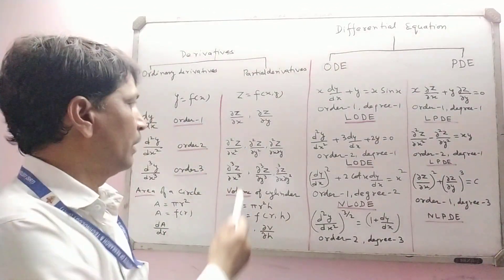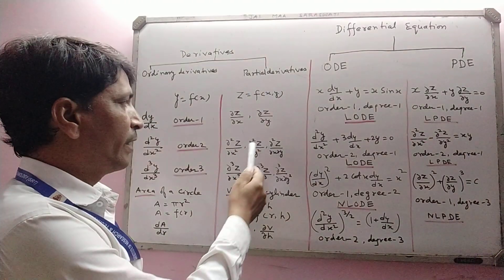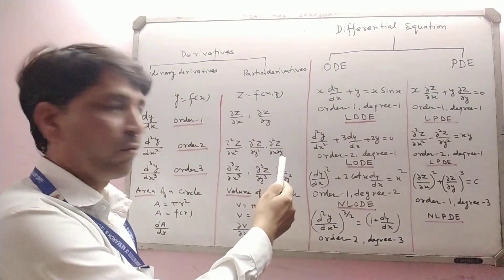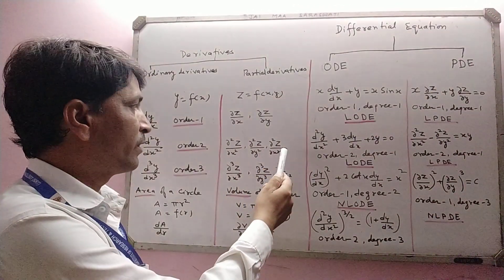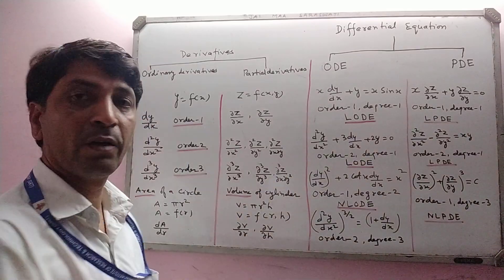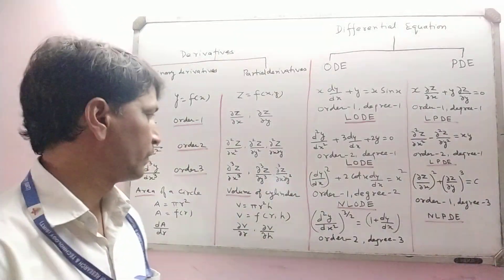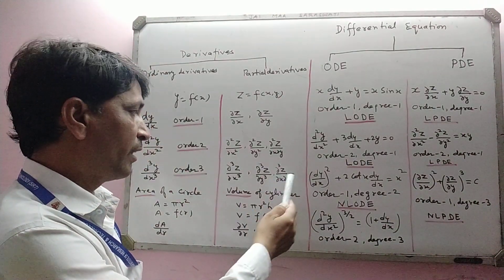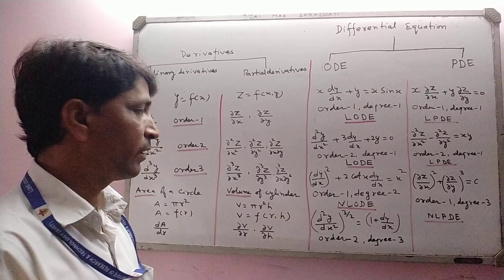∂²z/∂x², ∂²z/∂y², and ∂²z/∂x∂y — these are partial derivatives of order 2. And there are also partial derivatives of order 3.